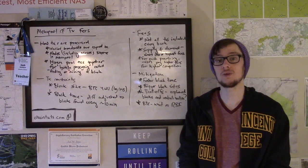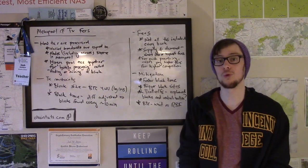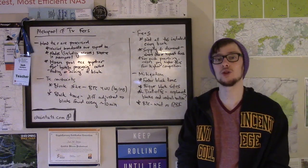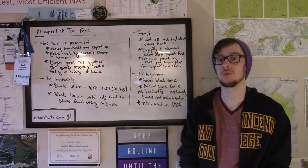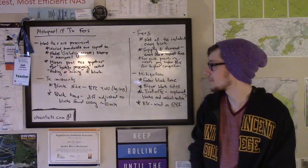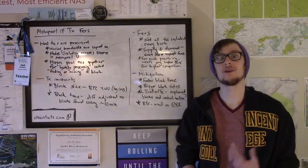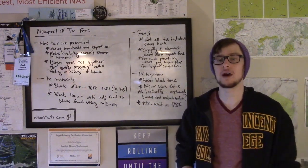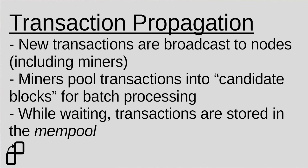In order to understand a bit about the mempool and transaction processing, we need to talk about what actually happens to a Bitcoin transaction when you send it out from your wallet. When you send value from your wallet to somebody else on the Bitcoin network, your wallet creates and signs a transaction, which is really a data structure full of information that the network needs in order to process it.